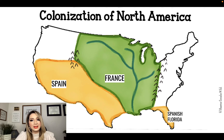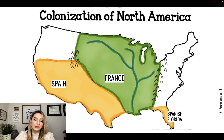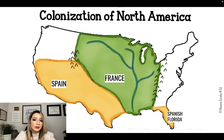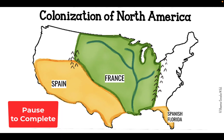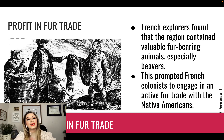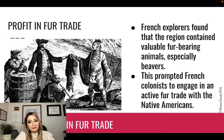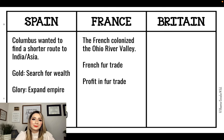Don't forget to color in those rivers, which are going to be really important for the entire school year. Specifically the Mississippi River is going to play integral parts in acquiring new land and fighting during wars. French explorers found that the region contained valuable fur-bearing animals, especially beavers, which prompted French colonists to engage in an active fur trade with the Native Americans. So why did the French come to colonize? For the fur trade — a profit-making venture. Go ahead and fill up your graphic organizer.